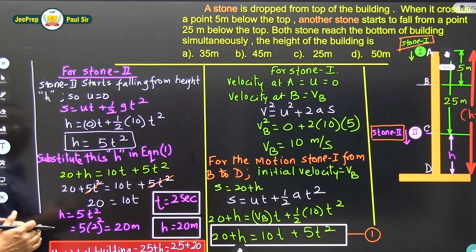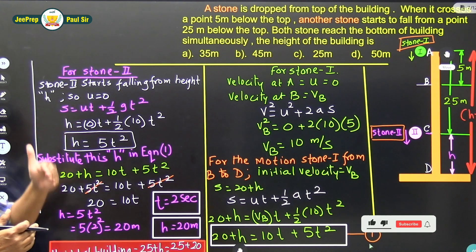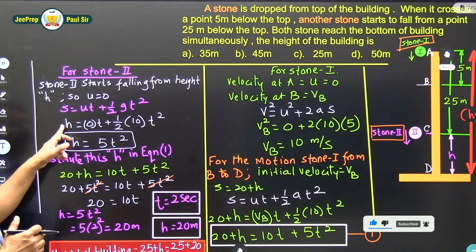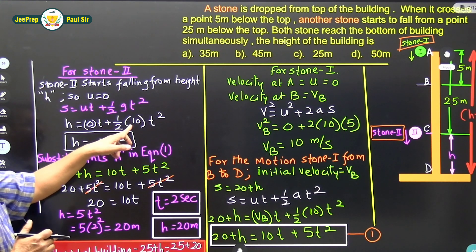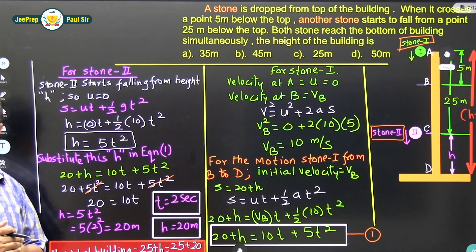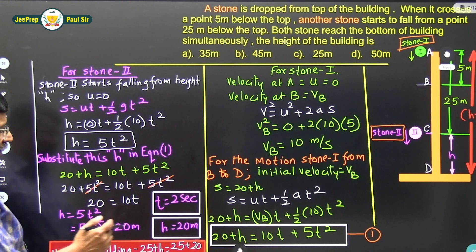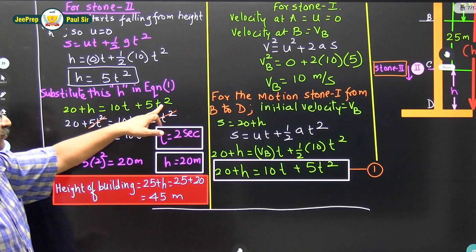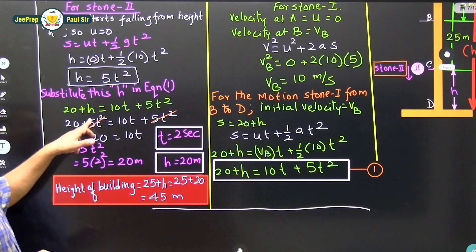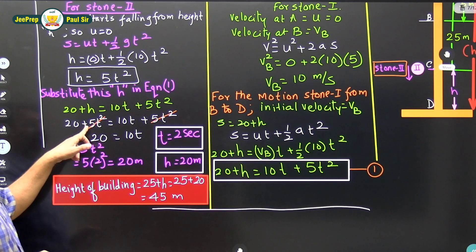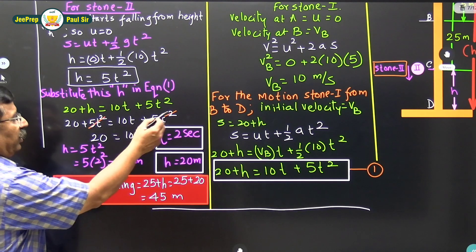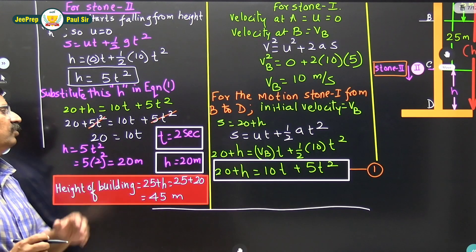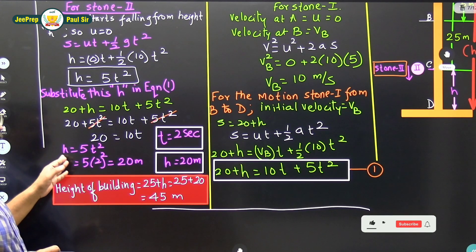For stone 2, it starts falling from rest at point C, so u = 0 and g = +10. Using s = ut + ½gt², we get h = 5t². Substituting into equation one: 20 + 5t² = 10t + 5t². The 5t² terms cancel, giving 20 = 10t, so t = 2 seconds.